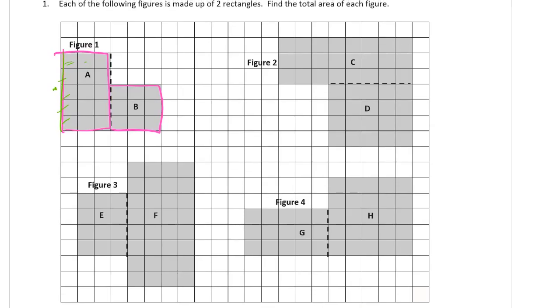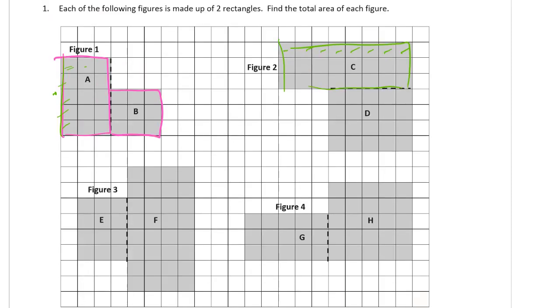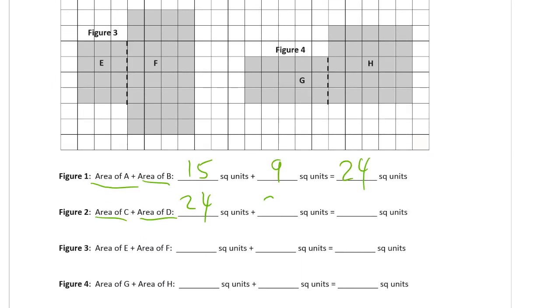Figure 2, we have 1, 2, 3, 4, 5, 6, 7, 8. It's 3 rows of 8, 3 times 8 is 24. So that's the area of C is 24 square units. Then there's the area of D, which is 1, 2, 3, 4, 5, 1, 2, 3, 4 rows of 5, which is 20 square units. And 20 plus 24 is 44 square units.